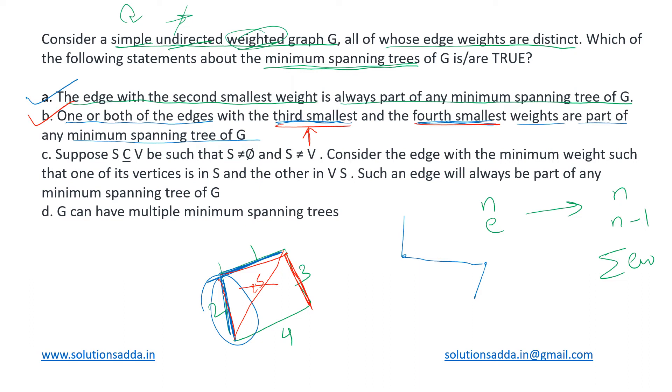Suppose S belongs to V. This is kind of a graph cut we are talking about. It has been divided into two vertex sets, such as we create a partition. Two vertices belong to this part and other two belong to the other part, such that none of them is empty and both are unequal. So we have to consider the edge with minimum weight such that one of its vertices is in S and the other is not at S, means in the other vertex set.